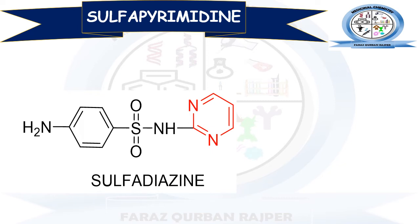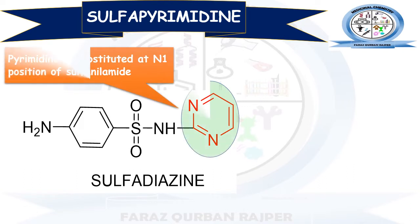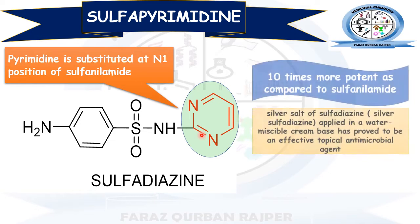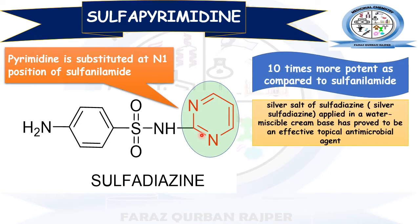The next derivative is Sulfapyrimidine. Sulfapyrimidine is the derivative of sulfanilamide or sulfonamide in which the N1 position is substituted with the pyrimidine ring, the heterocyclic ring in which two nitrogen atoms are present. Sulfapyrimidine has 10 times more potency in comparison to sulfanilamide, as different derivatives of sulfanilamide are formed to achieve good potency or good therapeutic properties. The silver salt of Sulfapyrimidine is also available.